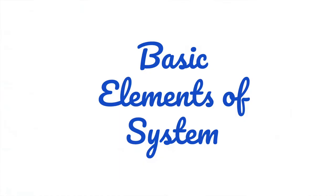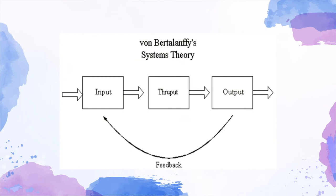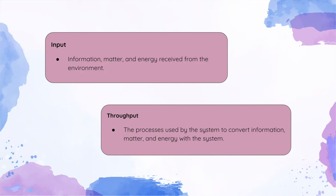Basic elements of a system: a system has three basic elements — input, processing, and output. The other elements include control, feedback, boundaries, environment, and interfaces. In Ludwig von Bertalephi's systems theory, there are four elements discussed. Systems theory is an exchange theory. The parts of the theory that become exchange are: first, input — the information, matter, and energy received from the environment; second, throughput — the process used by the system to convert information, matter, and energy within the system.